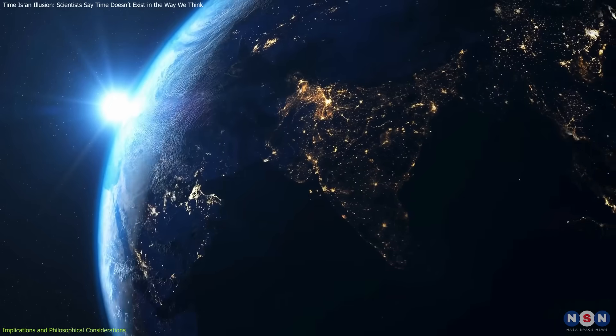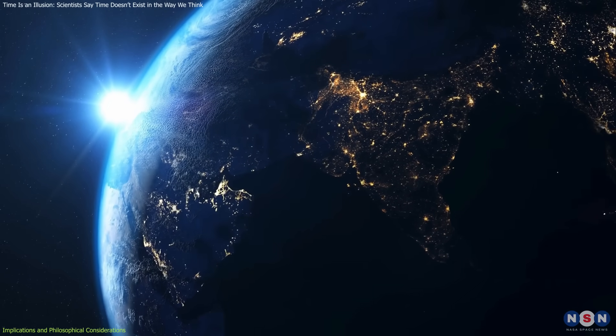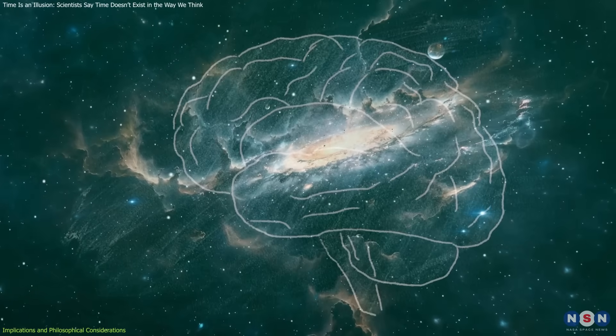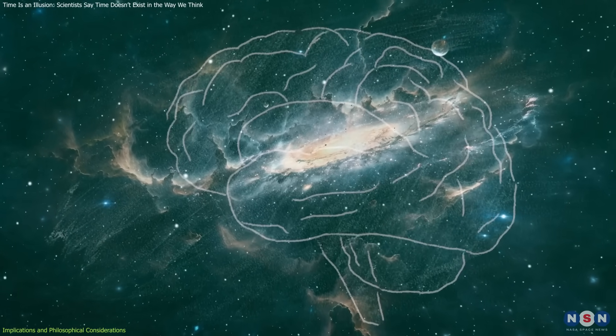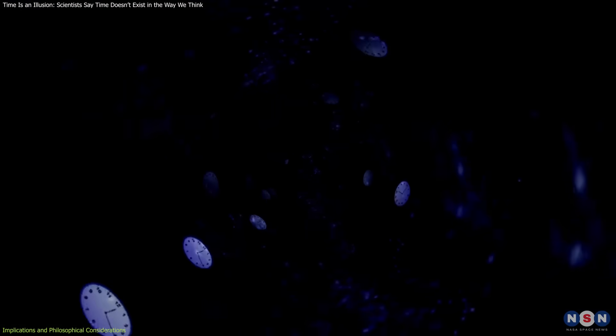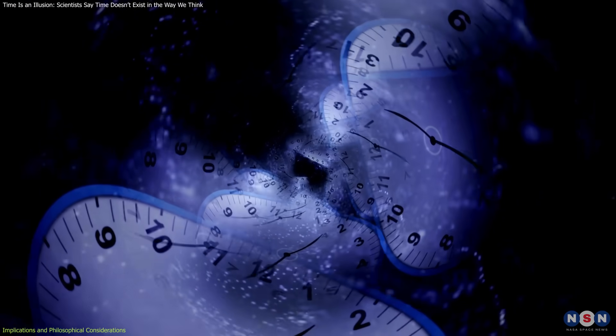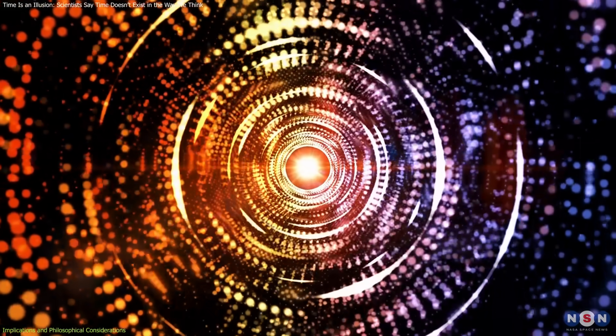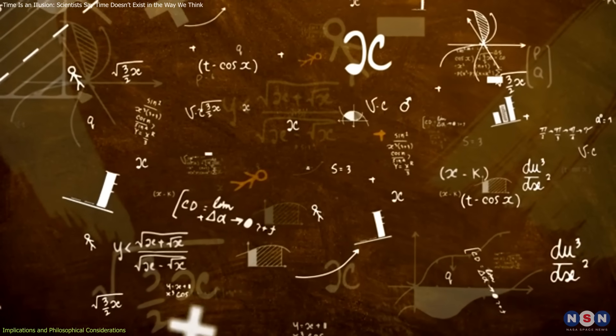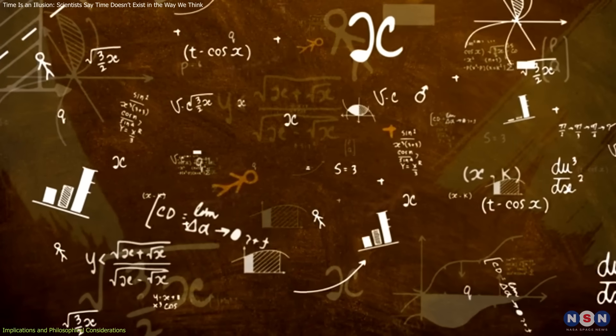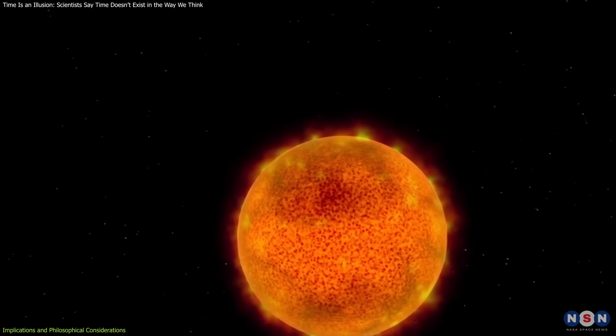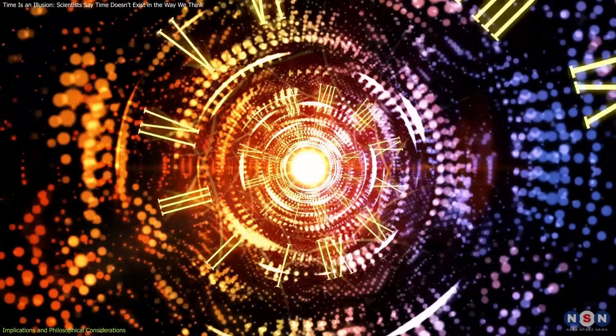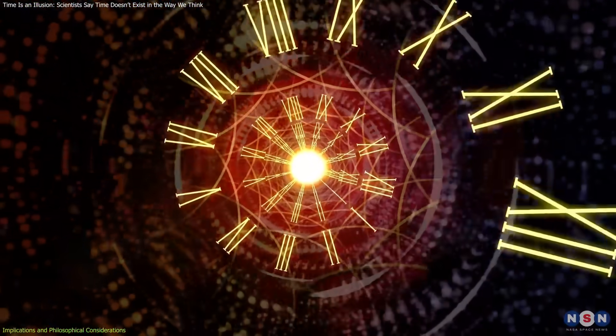If true, reality itself may not be as dynamic as it feels, but instead, a subjective construct shaped by human perception and interaction with the universe. The concept of emergent time could revolutionize efforts to unify quantum mechanics and general relativity, two of the most successful yet incompatible theories in modern physics. General relativity treats time as a dynamic entity influenced by gravity, while quantum mechanics treats it as an external parameter.